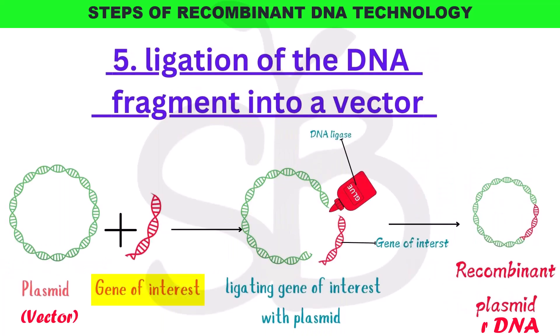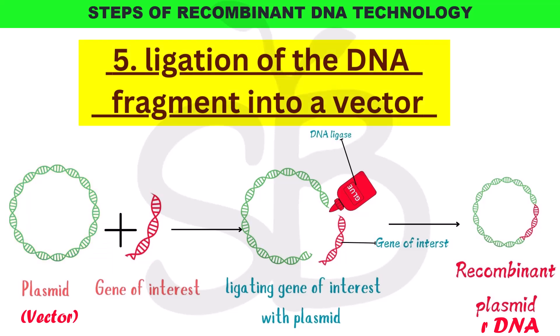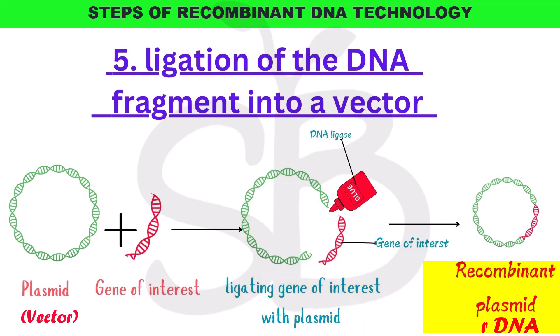We find the gene of interest, then find the vector — a plasmid. This plasmid is ligated with the gene. This step is called ligation of DNA fragments into a vector. The result is a recombinant DNA.